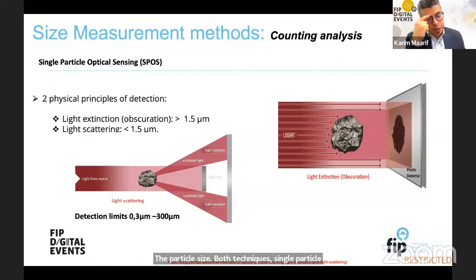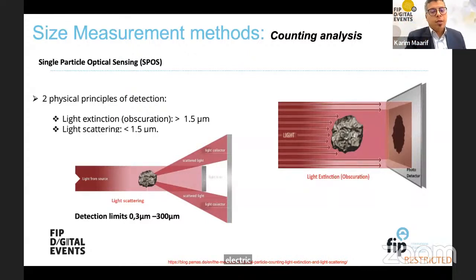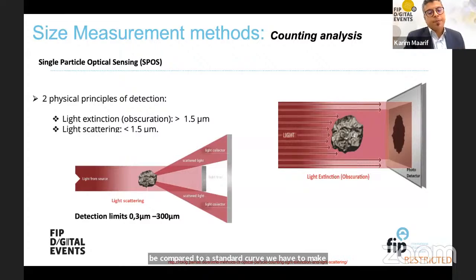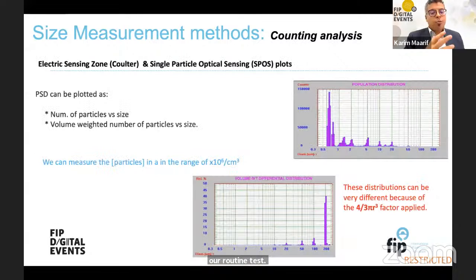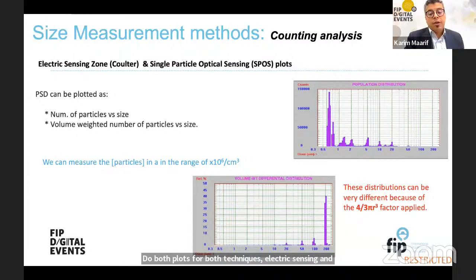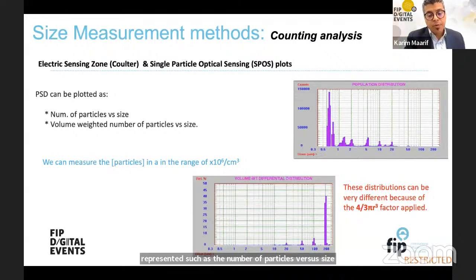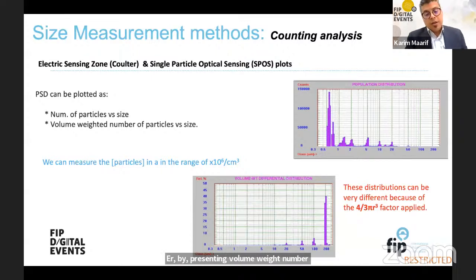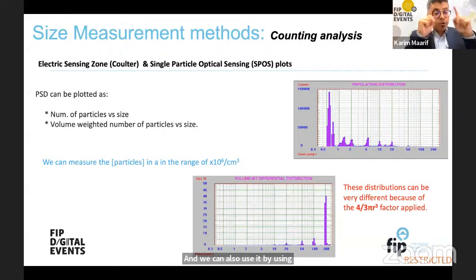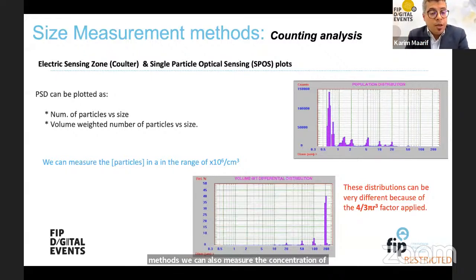Both single particle optical sensing and electrical particle sensing results can be compared to a standard curve made before routine testing. The plots for both techniques can be represented either as number of particles versus size, or by presenting volume, weight, and number versus particle size. Using these methods, we can also measure the concentration of particles in a range of one million per cubic centimeter.